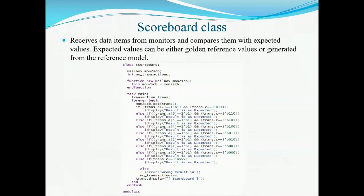Next is the scoreboard. The scoreboard receives data items from the monitor and compares them with the expected value. It varies from design to design based on the DUT. If the calculation gets a true value, it displays that the result is as expected. If there is an error, the message 'wrong result' will be displayed.